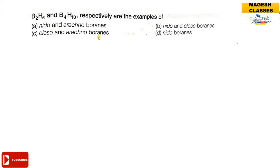Let us move into the question: B2H6 and B4H10 respectively are the examples of nido and arachno boranes. We need to identify nido, closo, arachno, and nido boranes.